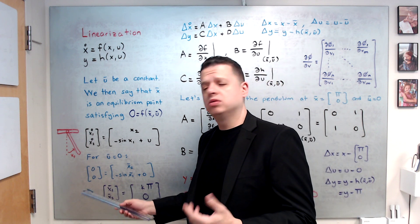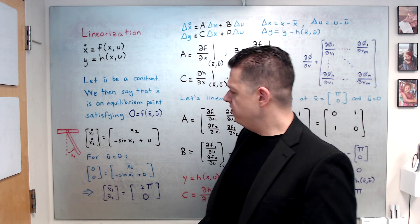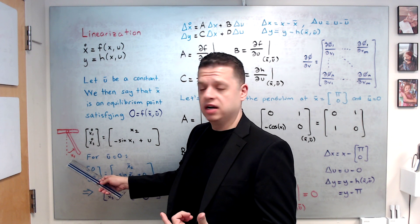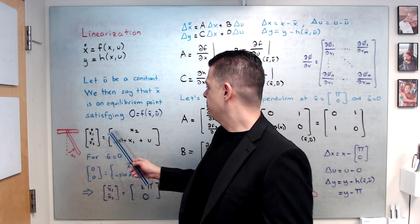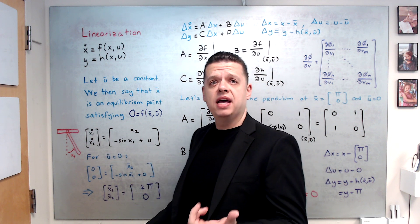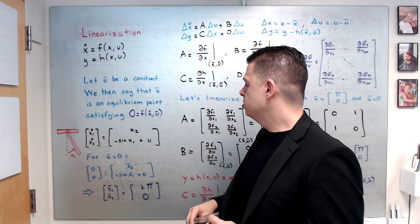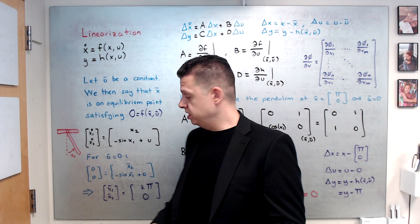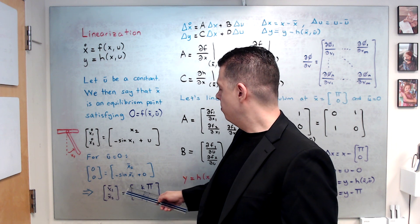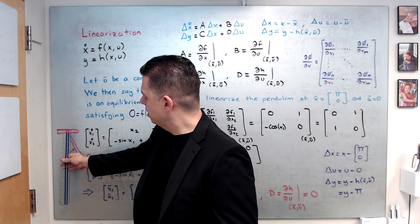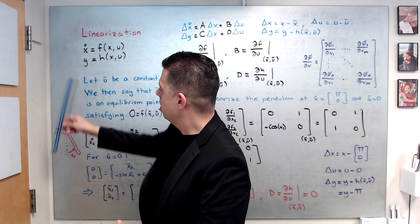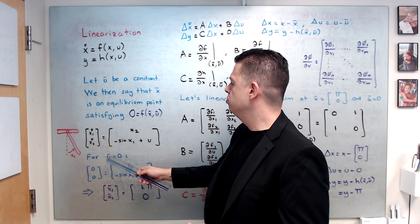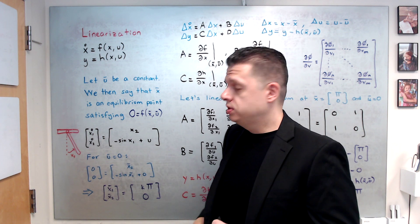So from the first line, basically x2 bar is zero and x1 bar is k multiplied by pi. And here k is zero, one, two, so on and so forth. So if we look at this picture, the pendulum, x1 denotes the angle and x2, which is x1 dot, is the angular velocity. So at the equilibrium, angular velocity is zero, which makes sense, right? Motion freezes. And x1 bar can be like this, the downward position or upward position.